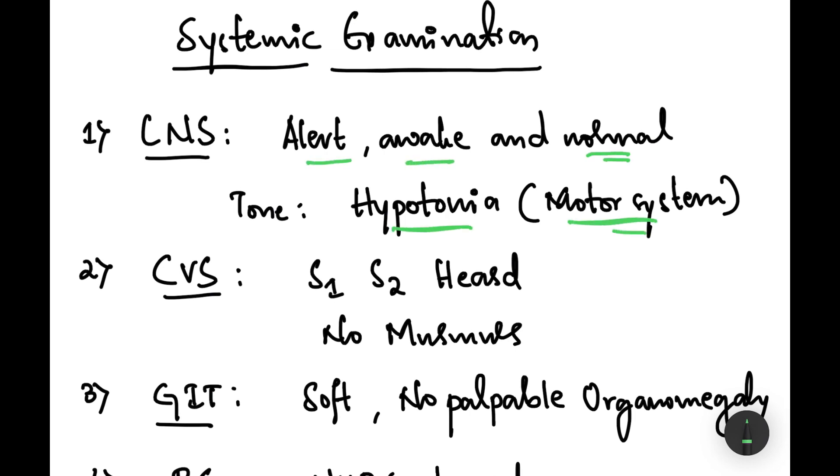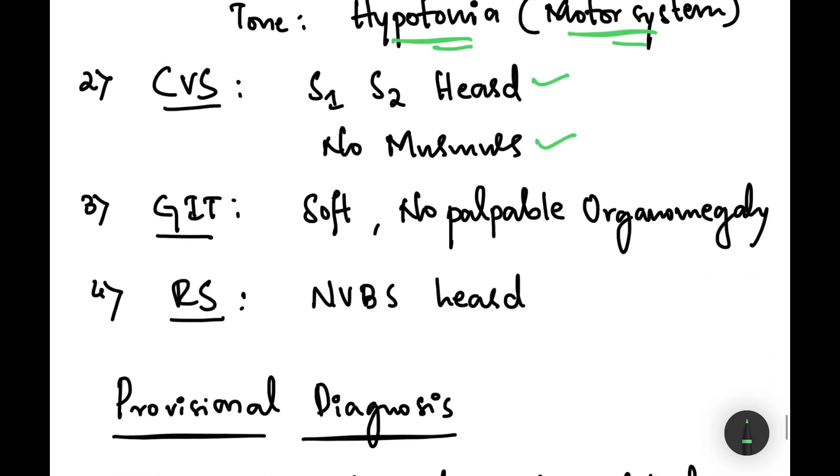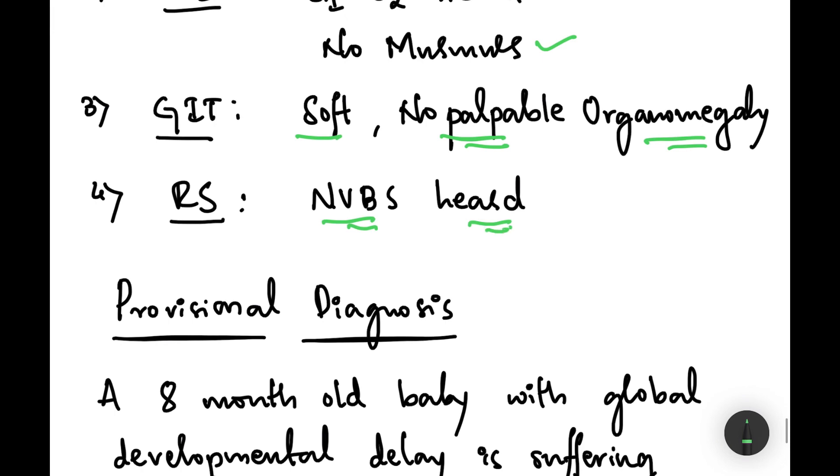Moving on to CVS, S1 and S2 were heard, there were no murmurs. GIT, it was soft and no palpable organomegaly was present. And RS, normal vesicular breath sounds were heard.